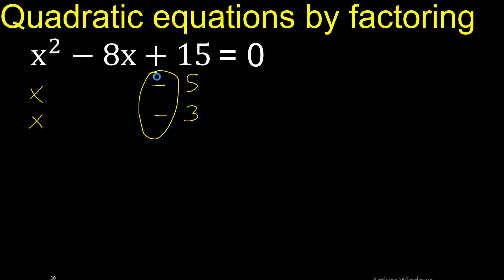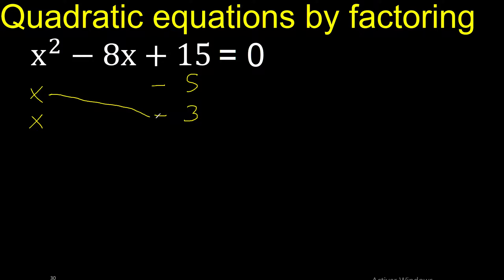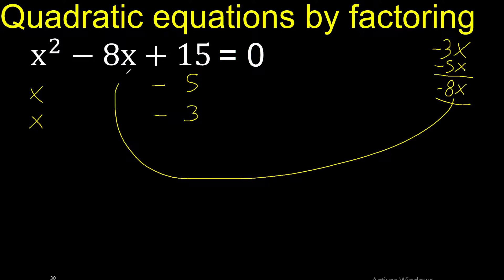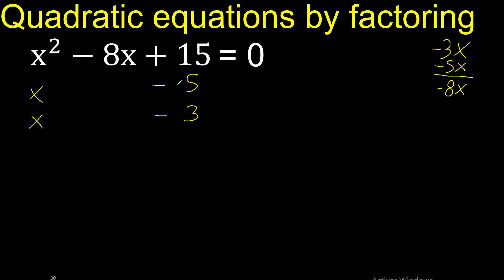Let's try minus, because here we have minus. Let's analyze if it is correct: x multiplied by minus 3, and x multiplied by minus 5. Minus 3 plus minus 5 is minus 8x — therefore it is correct.